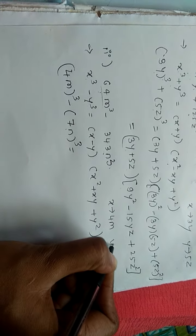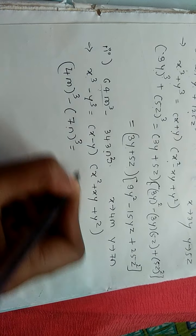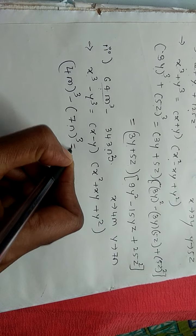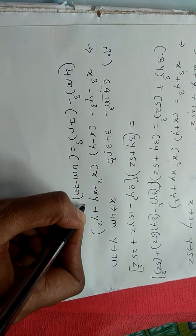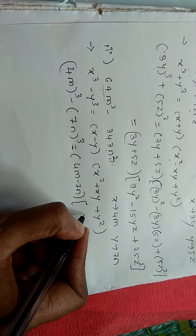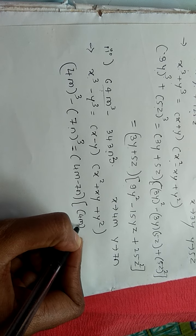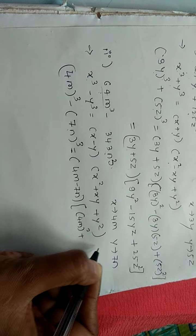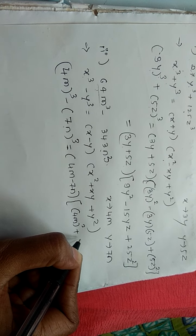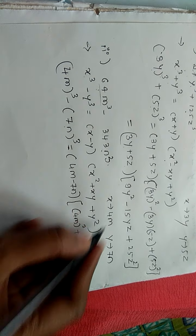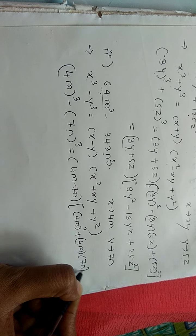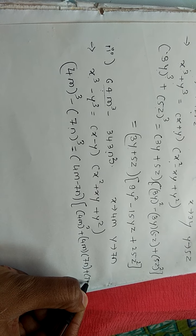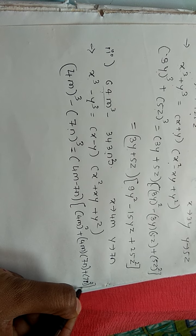So value of this equals to x minus y, that is 4m minus 7n into bracket x square, that is 4m square plus x into y, x is 4m into y 7n plus y square, that is 7n square, bracket complete. Equals to 4m minus 7n, we don't have common here or we can't subtract this.